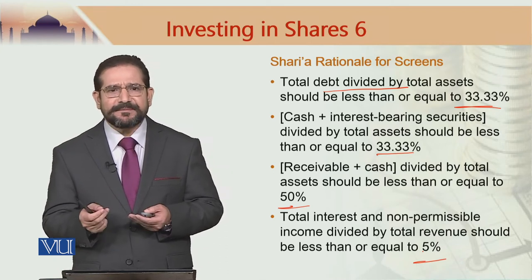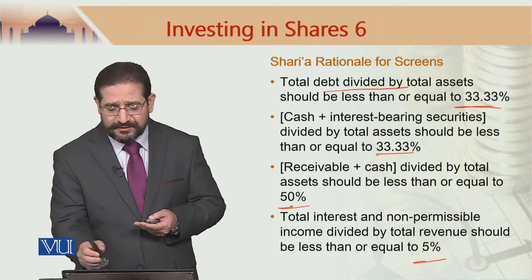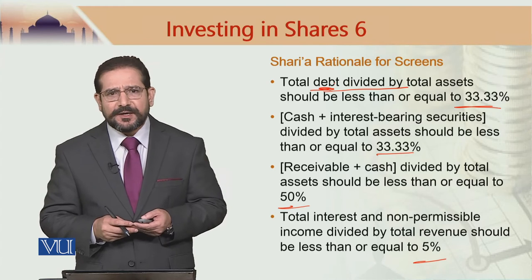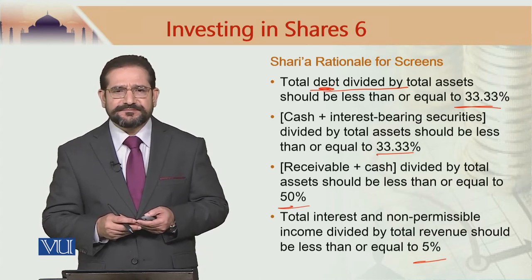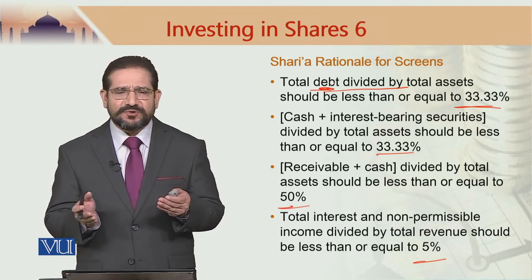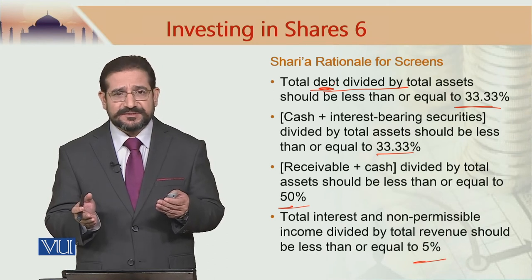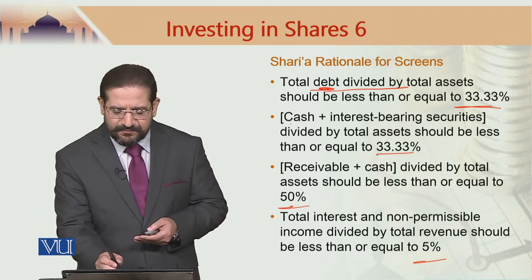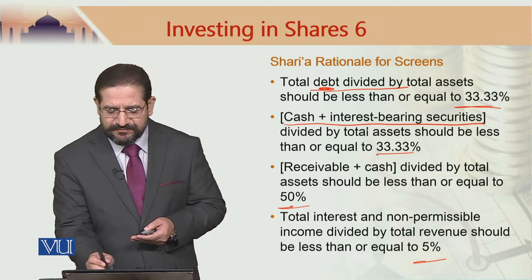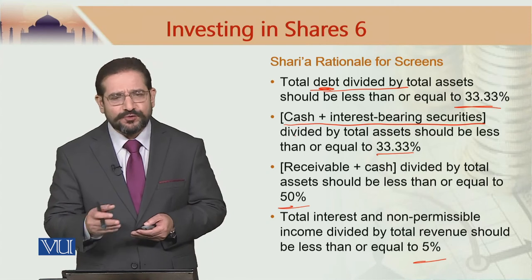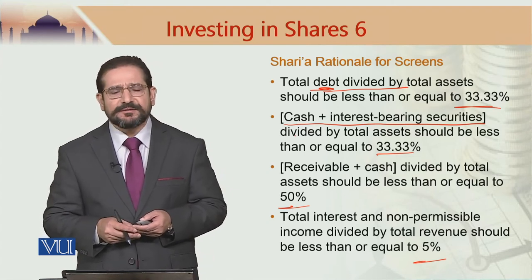The rationale is that the ratio refers to interest-bearing debt divided by market capitalization. It says 'debt' rather than 'interest' — this is deliberate because sharia scholars would not like to give a view on interest directly, as this is a very sensitive issue. The second ratio is cash plus interest bearing securities divided by market cap or total assets, which should not exceed 33%.